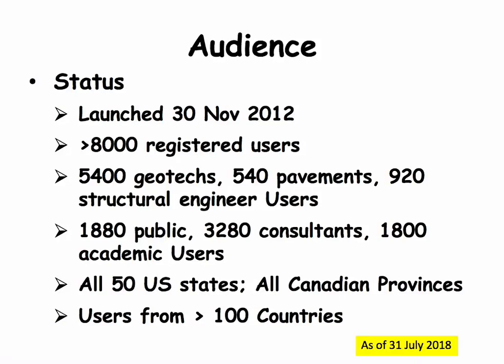The system was launched in November 2012 and we presently have over 8,000 registered users: 5,400 geotechnical engineers, 540 pavement engineers, 920 structural engineers, 1,880 public users primarily from DOTs and FHWA, 3,280 consultants, and 1,800 academic users including about 350 faculty. Some colleagues use this website for their ground improvement classes. We have registered users from all 50 states, all Canadian provinces, and users from over 100 countries.